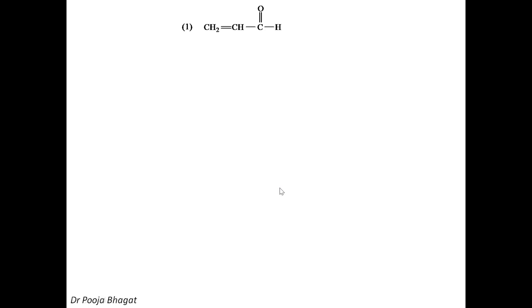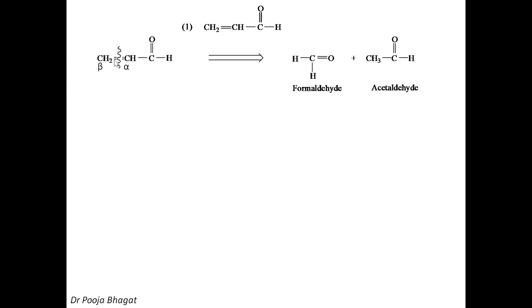Now I am going to discuss a few examples for alpha-beta unsaturated carbonyl compounds. If it is an alpha-beta unsaturated carbonyl compound — this is the carbonyl, this is the alpha carbon, this is the beta carbon — we do the fission at this point. When you divide this, this part becomes the carbonyl part: oxygen comes here, giving CH₂O — that is formaldehyde. And two hydrogens come here — that is CH₃CHO, acetaldehyde. So the starting materials are formaldehyde and acetaldehyde.